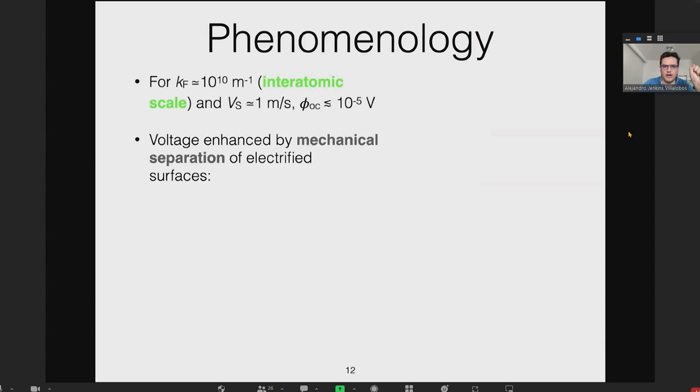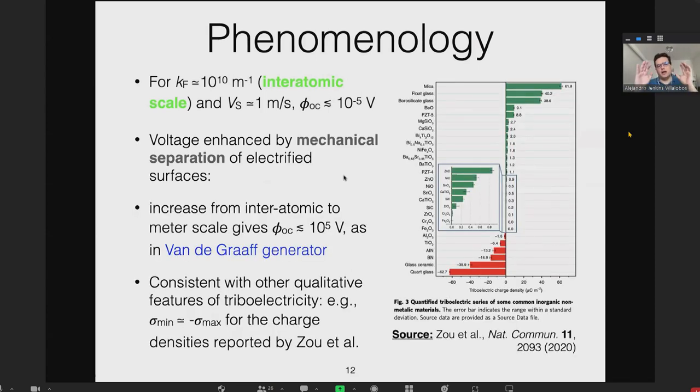If you put in the numbers, the maximum voltage you'll build up just by pure sliding will be of order 10^-5 volts. But as everybody knows, once you've accumulated the charge you can mechanically separate the layers and multiply the voltage by however much you multiply the separation. In the Van de Graaff generator this goes from angstrom scale to meter scale, so you get 10^5 volts, which is the right order of magnitude. If you look at recent experiments, the maximum reported density of charge is approximately one minus the other, which you would expect in this theory.